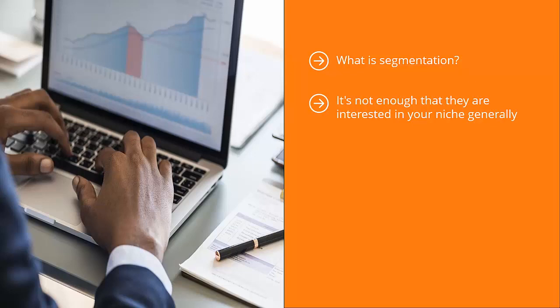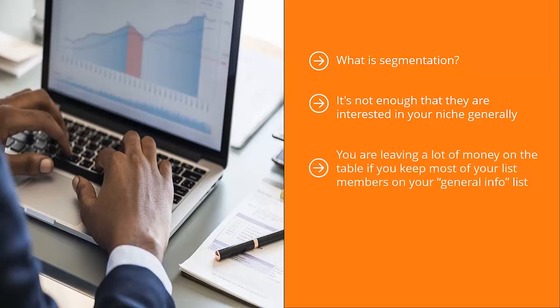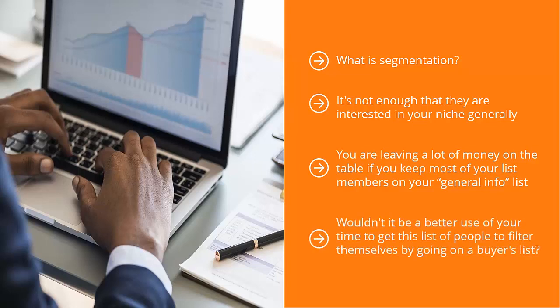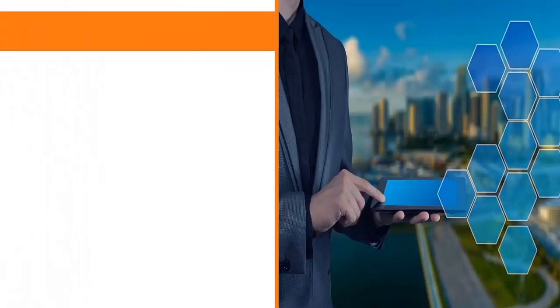You can also segment people based on their purchasing behavior. You are leaving a lot of money on the table if you keep most of your list members on your general info list. You can send update after update to this general list, and the majority of people are probably not going to buy. Wouldn't it be better to get this list of people to filter themselves by going on a buyer's list? Once they are on your buyer's list, you can send better crafted, more targeted emails to get them to buy.